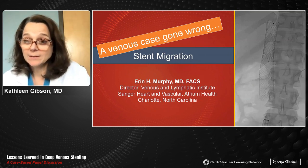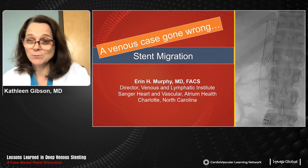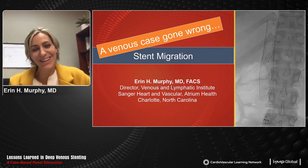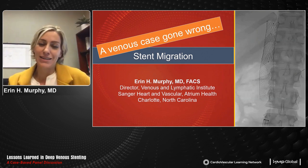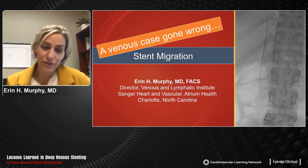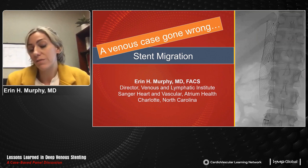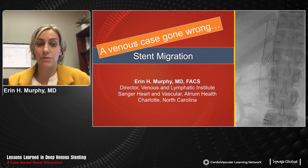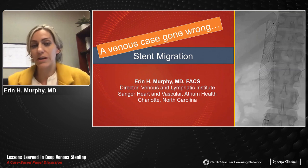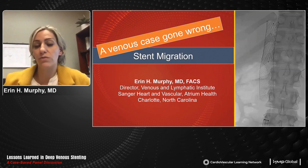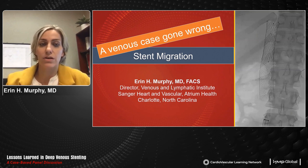The panel transitions to discussing what to do when a case goes wrong. Dr. Aaron Murphy presents a case of stent migration — an infrequent complication if cases are done correctly, but important to discuss given current events including stents being pulled from the market. He became involved in this case after the fact but believes it is worth reviewing in detail.